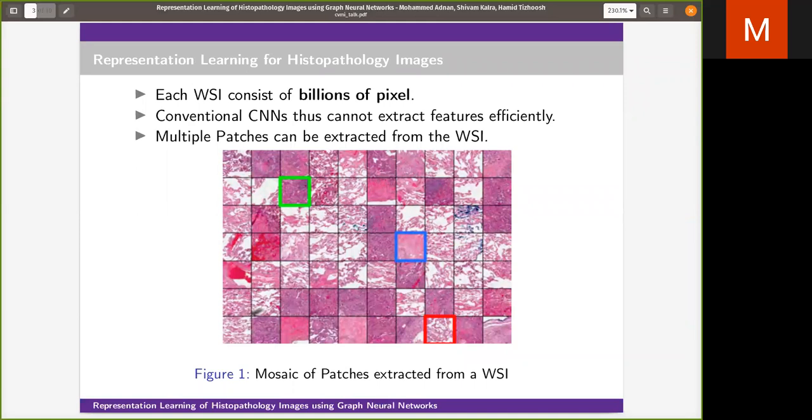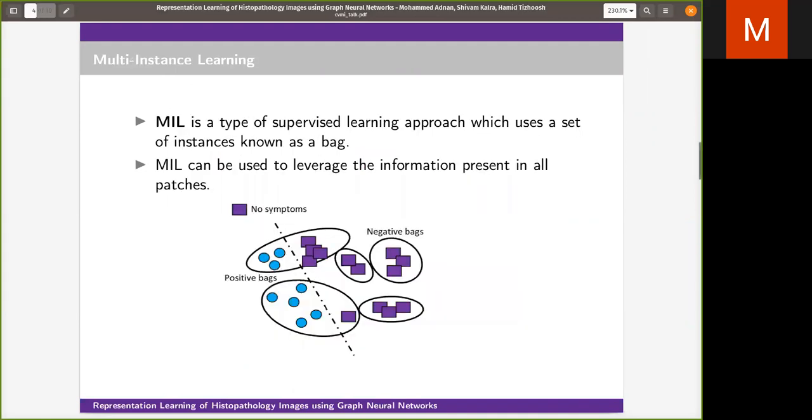One way to deal with this problem is to extract multiple patches from WSI. Each WSI can give us about 200 to 500 patches depending on size. Once you have the patches, they can be grouped together in a set, and then multiple instance learning algorithm can be used to train on the set of patches.